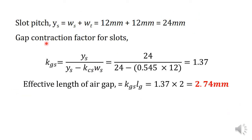The equation for gap contraction factor for slots, KGS, is equal to YS (slot pitch) divided by (YS minus KCS times WS). Here YS equals WS plus WT, which is 12 plus 12 equal to 24 mm. Substituting the values: 24 divided by (24 minus 0.545 times 12), KGS is equal to 1.37.